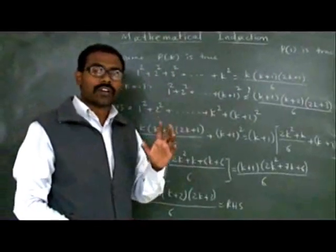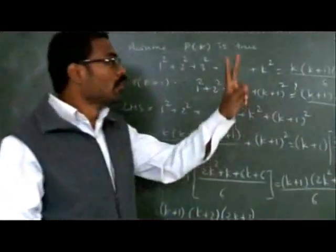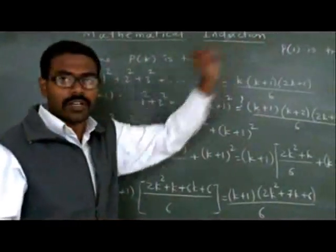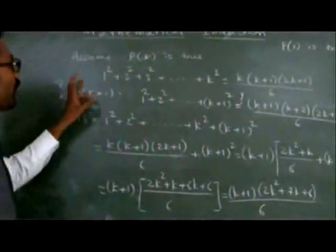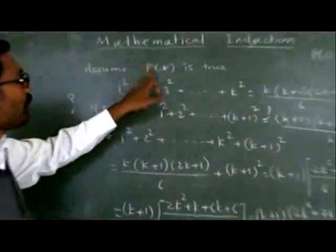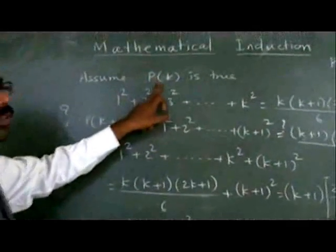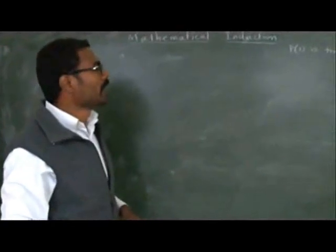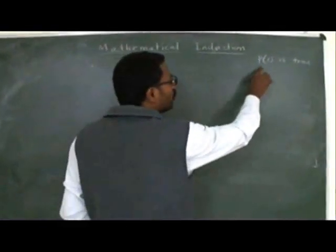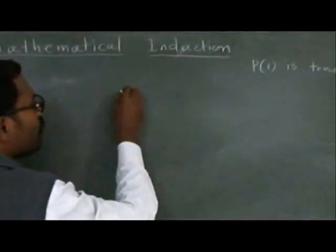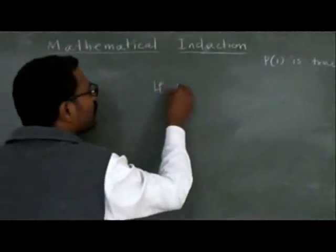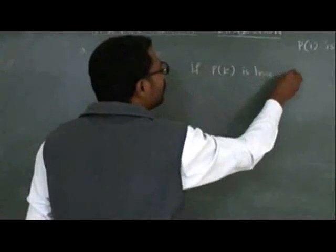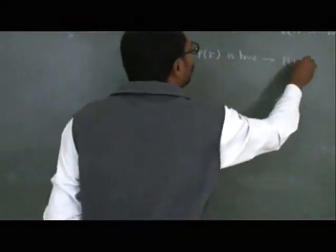So we have seen two things for the statement P(n): first, P(1) is true; and second, if P(k) is true, then P(k+1) is true. These are the two things we have proved so far.